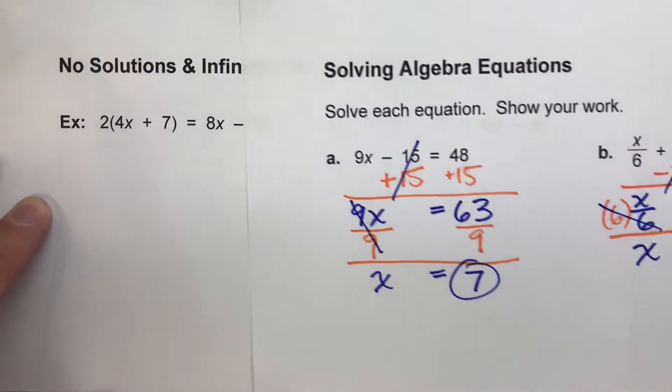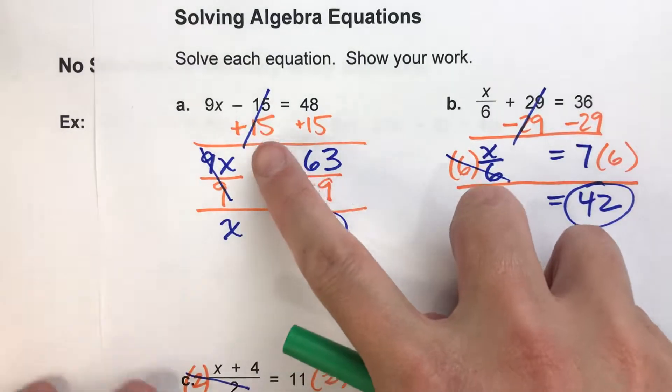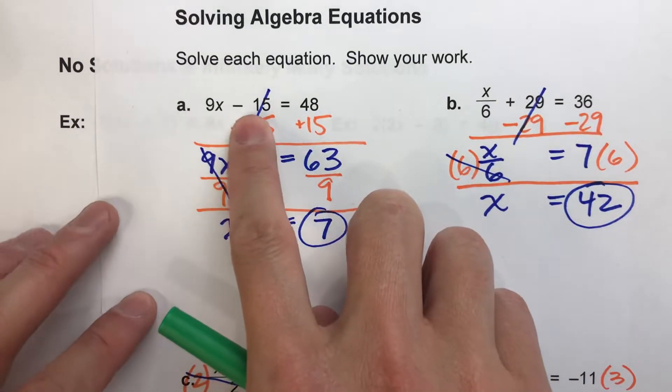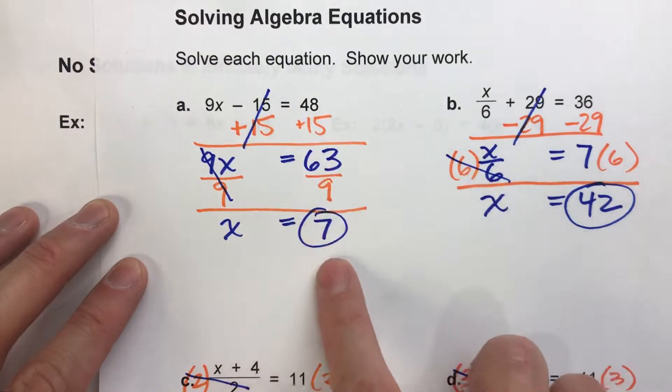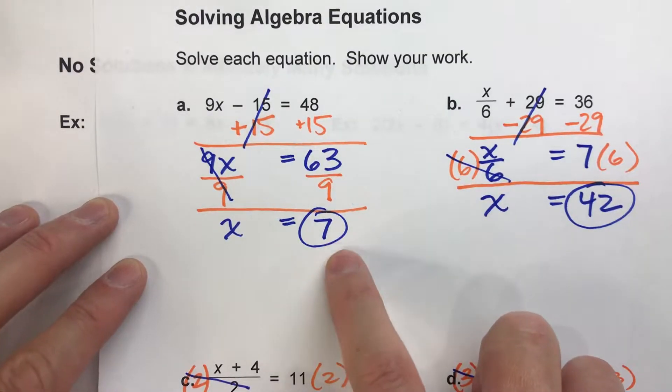So I'm going to pull up an easier equation that we can look at. For example, this one, 9x minus 15 equals 48. And we've solved this one before, the answer is 7.